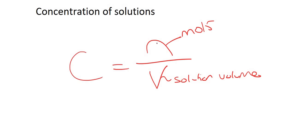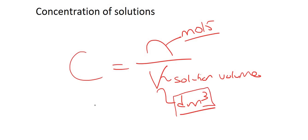Please make sure that when you use this formula, n is in moles and volume must be in decimeters cubed. We pretty much always use decimeters except for when we use the PV = nRT formula, where you must use meters cubed.